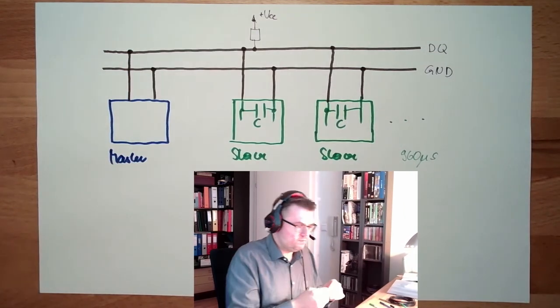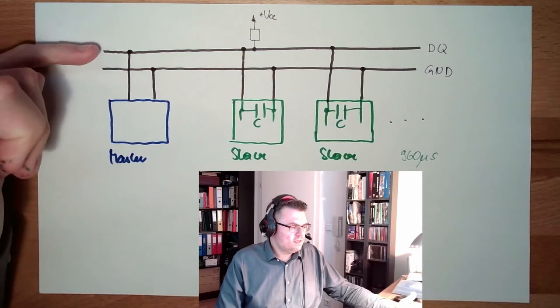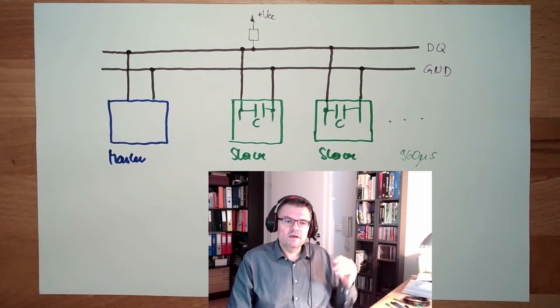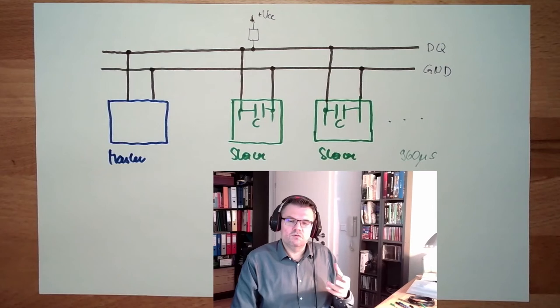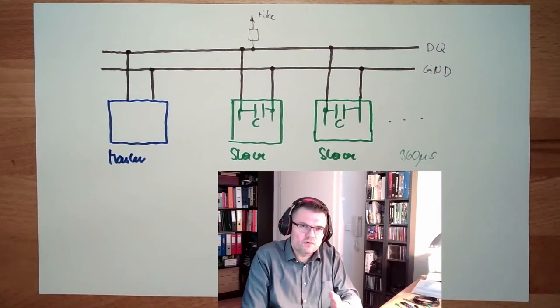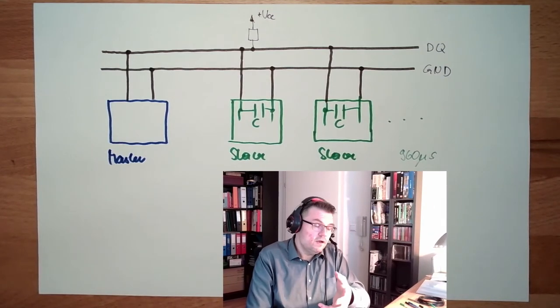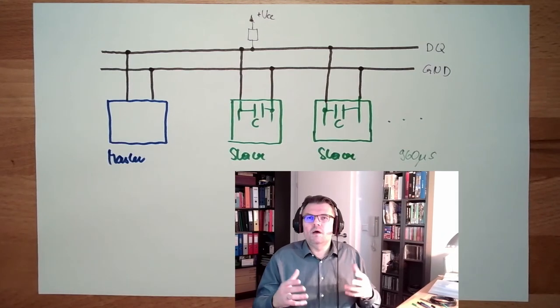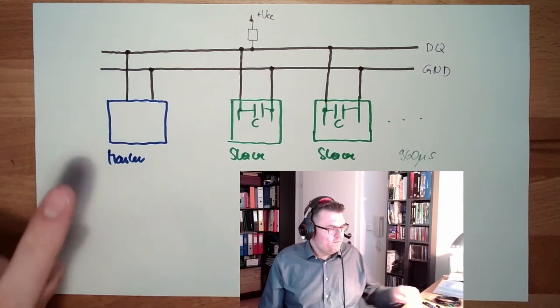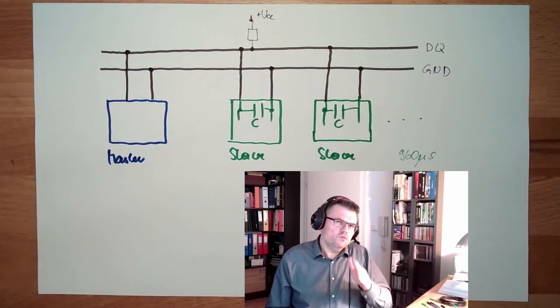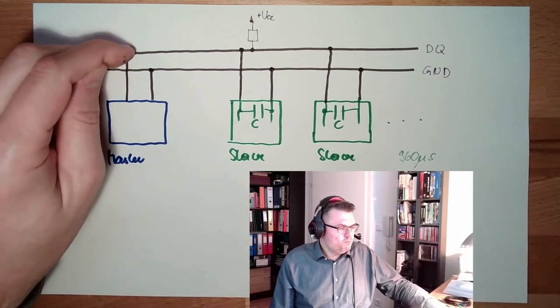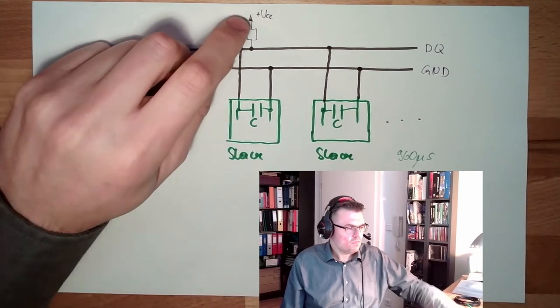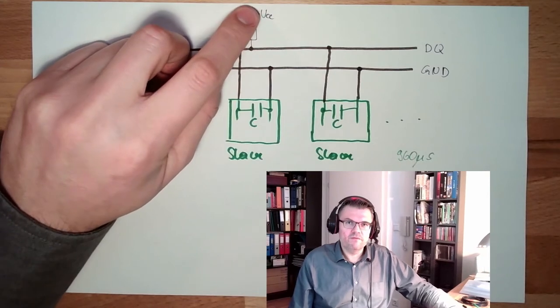This is how this is working. So since there is only one data line, there's no clock line, there's only one data line. So the transfer is asynchronous. So there is not now transfer, now transfer, now transfer. There is just, at some point in time, it's transferring. This point is always synchronized when the master is pulling this to zero, to low. Different voltage level, usually is five volt.